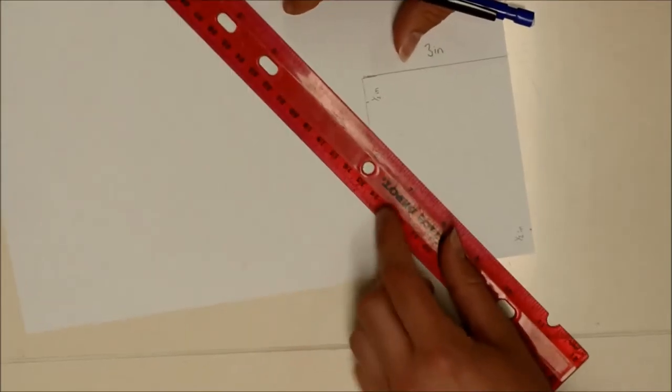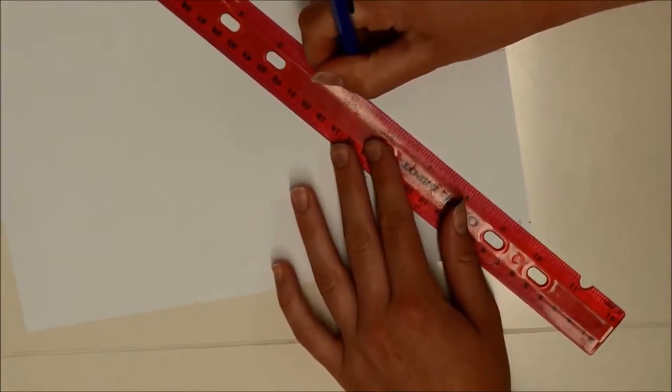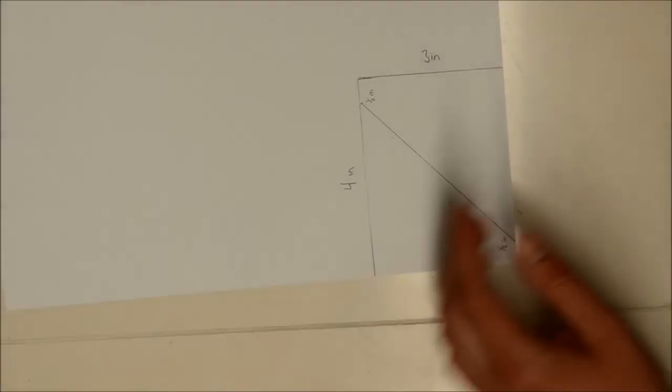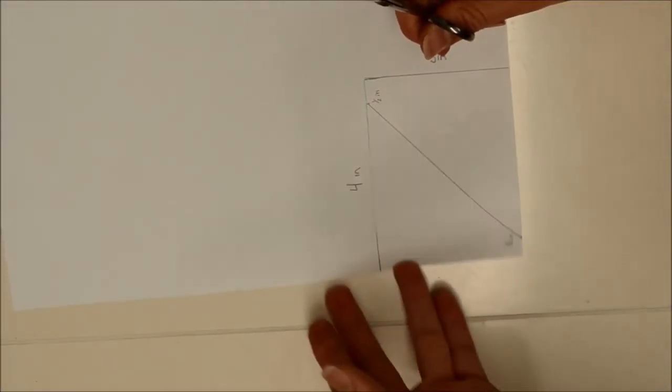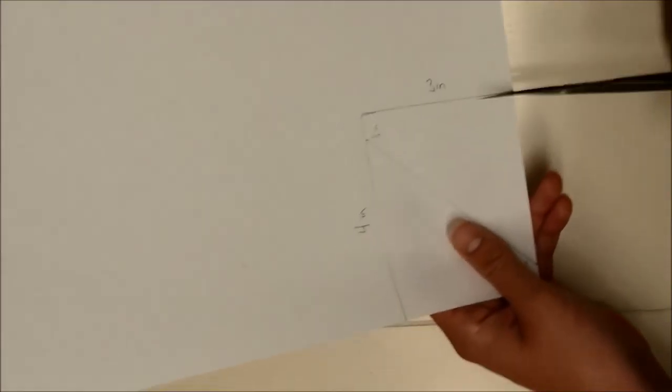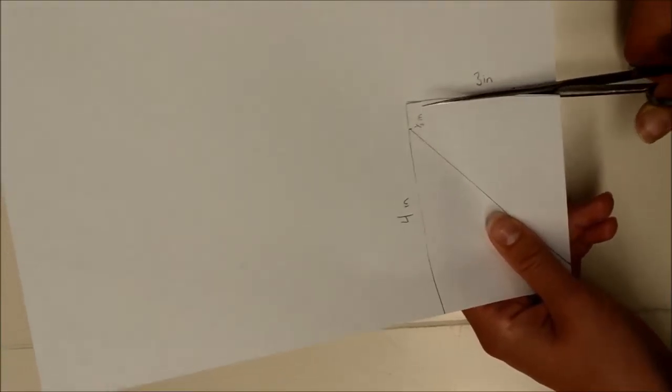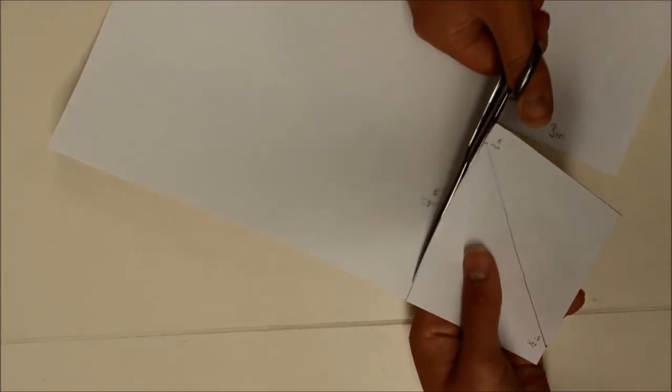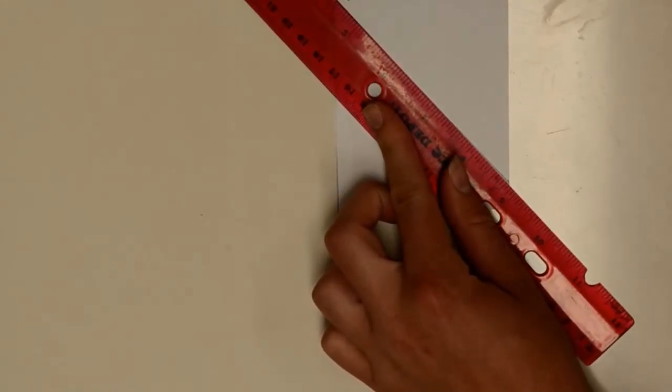Draw a line between the two marks that you drew, cut out the rectangle, and fold half of the paper over and crease it.